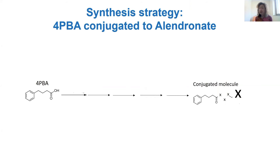Since 4PBA has a very quick turnover, you need a large amount if you deliver it systemically. So we wanted to reduce the dose and ensure delivery of a higher amount of the drug only to the cells we are interested in — the osteoblasts. We developed a biosynthetic pathway (which I cannot show for patent reasons) combining 4-phenylbutyric acid with alendronate as a prodrug. We now have the molecule, we are testing it in fish, we have already selected the dose by toxicity testing, and I hope to show you the results in the coming year.